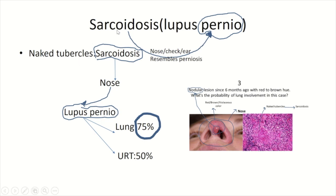The subtype of cutaneous sarcoidosis called lupus pernio presents when lesions involve the nose, the cheek, and the ear, resembling pernio. These are called lupus pernio.